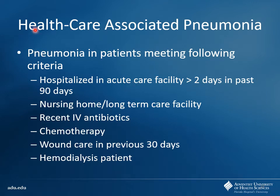Looking at healthcare-associated pneumonia — this is where you have patients who maybe have been hospitalized recently, greater than two days in the past 90 days. We still consider that healthcare-associated even if it wasn't developed directly in the hospital. This may be a readmission due to an infection that developed while they were there. Long-term care, nursing home facilities, recent IV antibiotics are also considered healthcare-associated.